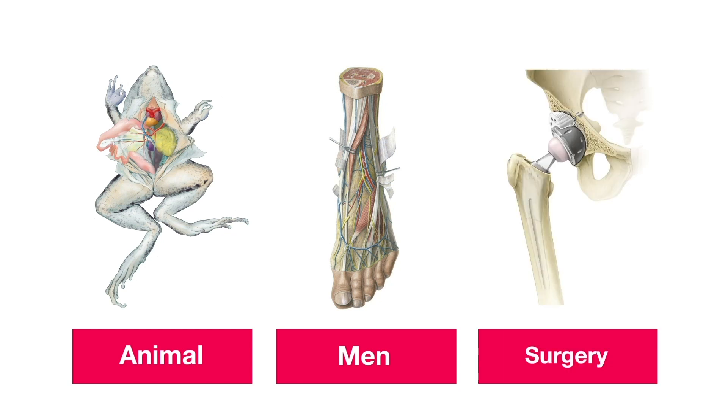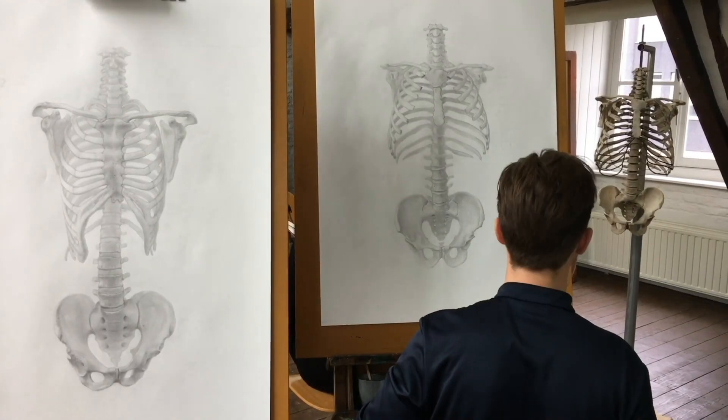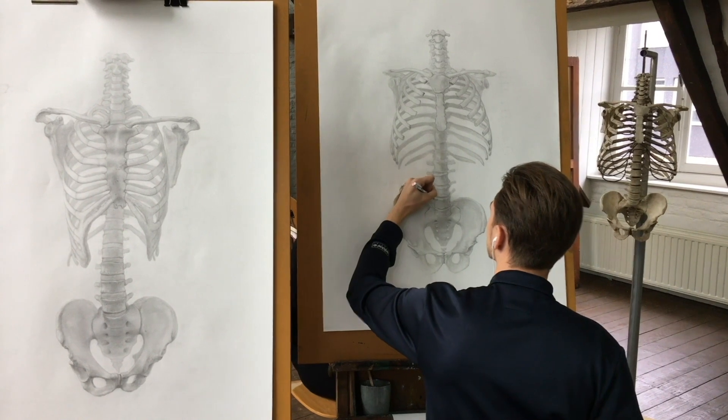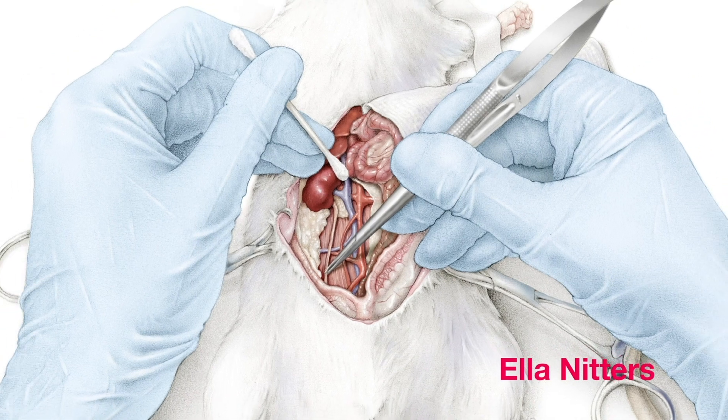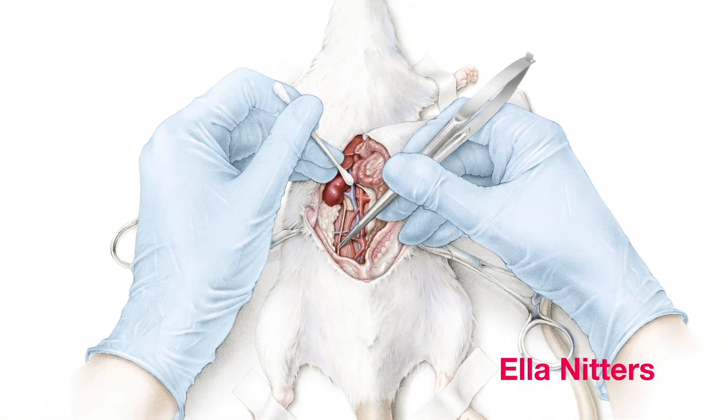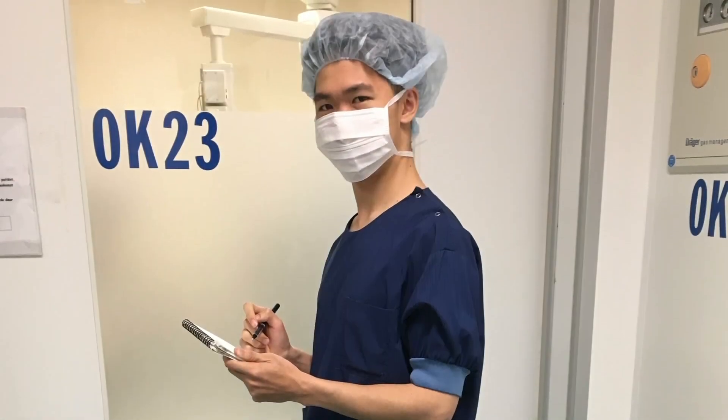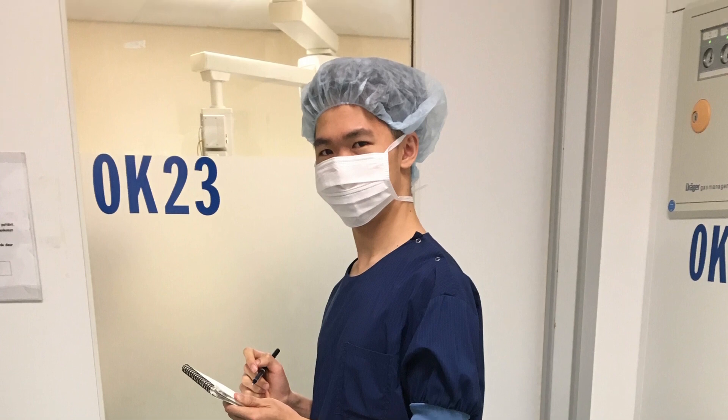The program is built up in three teams: animal, man, and surgery. Within every team, students carry out five or six assignments. Those assignments are carried out in traditional techniques to begin with, but to gather the information and facts that need to be depicted, students sometimes have to do dissections — both animal and human. They follow anatomy classes, and for the surgery team, students go into the surgical theater to witness procedures and then depict the surgery in specific steps for patient education or for scientific case reports.